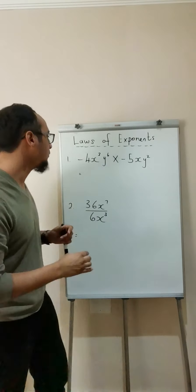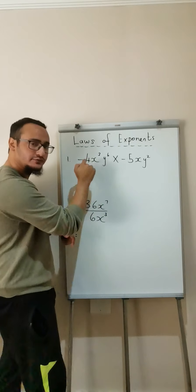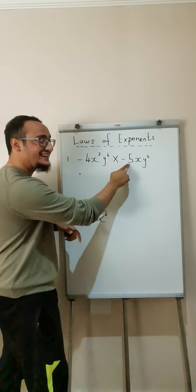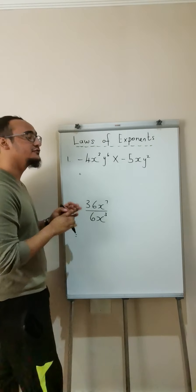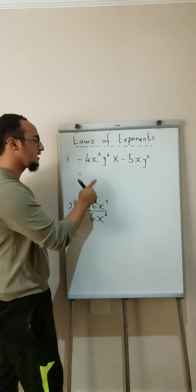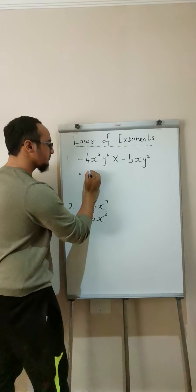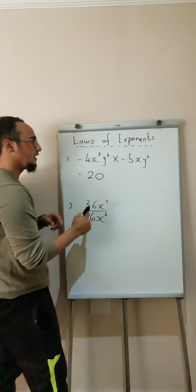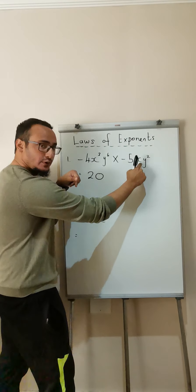On to example number 1. I have negative 4x cubed, y to the power of 6, multiplied by negative 5x and y squared. The first thing I do is I multiply my numbers. Negative 4 multiplied by negative 5 is equal to positive 20. x to the power of 3, multiplied by its corresponding x.